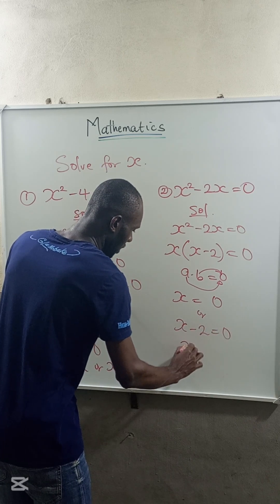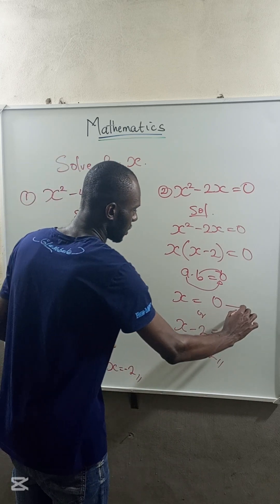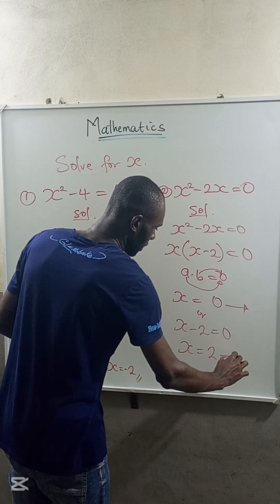Thus, x is equal to 2. So therefore, at this point, x is either 0 or x is 2.